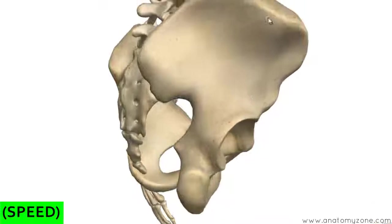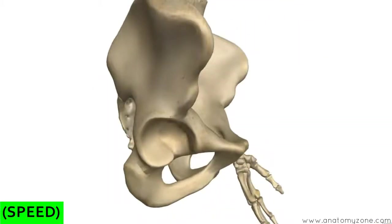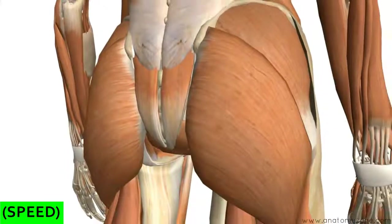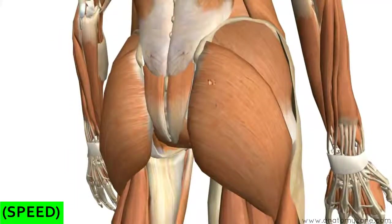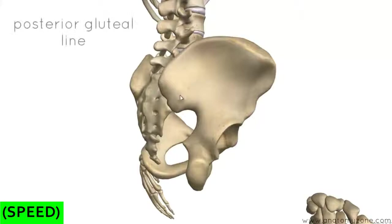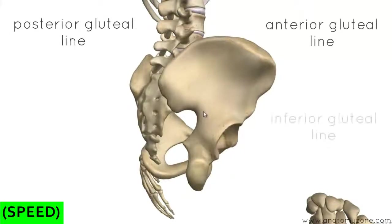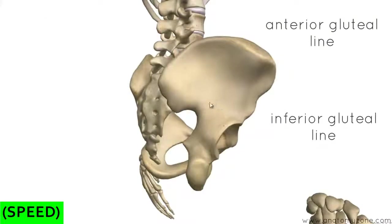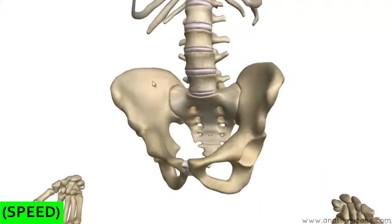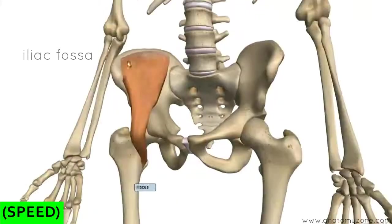Looking laterally at the hip bone, this is where the gluteal muscles attach — the gluteus maximus, medius, and minimus — on this lateral surface. There are a few ridges on this bone: the posterior gluteal line, the anterior gluteal line, and the inferior gluteal line, which are rough ridges where the gluteal muscles attach. On the medial surface, you've got a slight hollowing called the iliac fossa, where the iliacus muscle attaches and inserts on the femur to flex the hip.